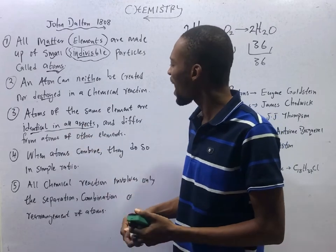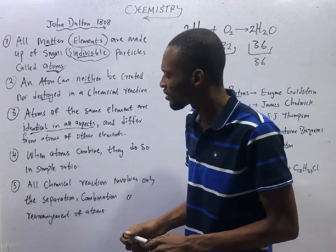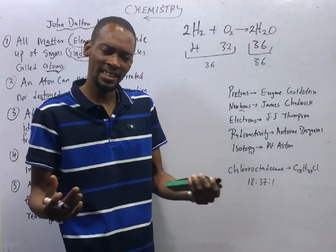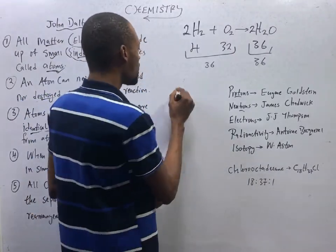Atoms of the same elements are identical in all aspects. That is, many atoms of the same elements, they are identical. But some, this is chlorine, you can have chlorine with atomic number 17 and mass number of 35.